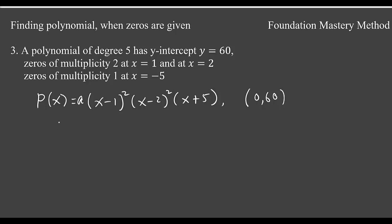(0 minus 1) squared, (0 minus 2) squared, (0 plus 5). Now if you simplify you get 60 equals a, and then you get 1, you got a 4, you got a 5.